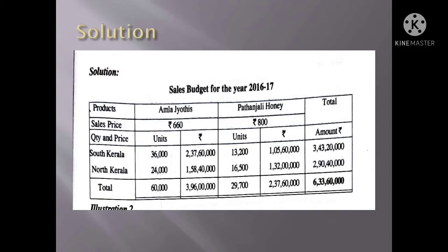In North Kerala, the quantity and price figures are worked out similarly. The sales price increase of 10% is applied to the North Kerala region. For the North Kerala product, a 10% price increase is applied bringing it to Rs. 880 per kg. We complete the sales budget table for the year 2016-17. That is our illustration two.